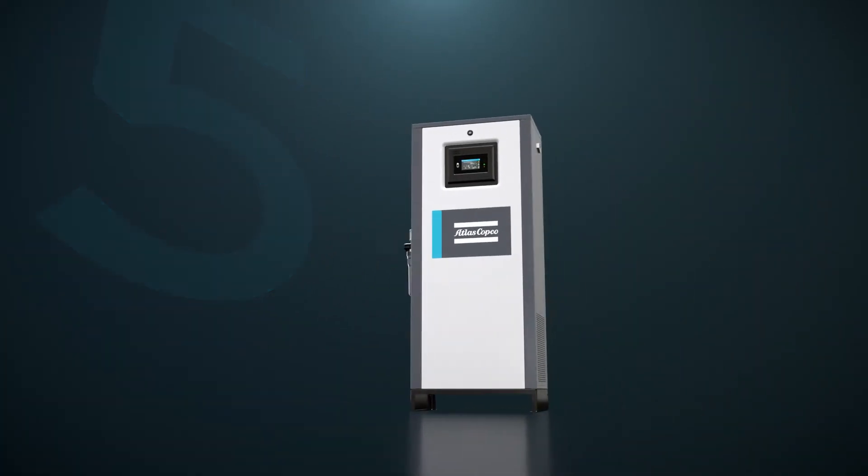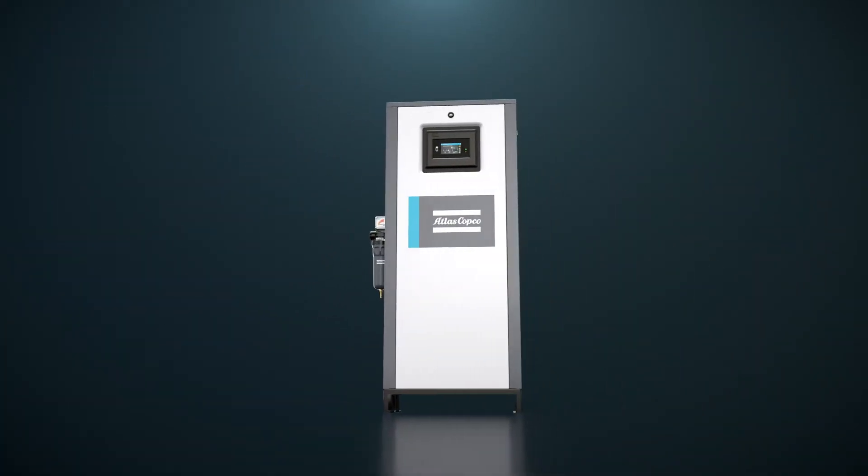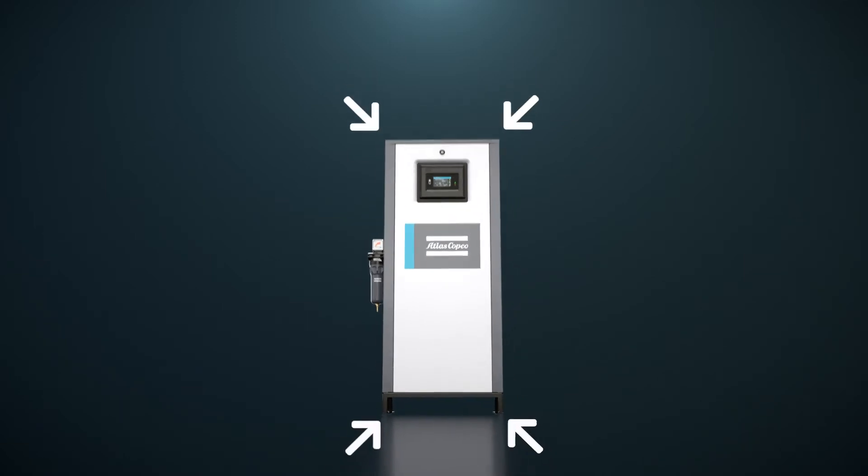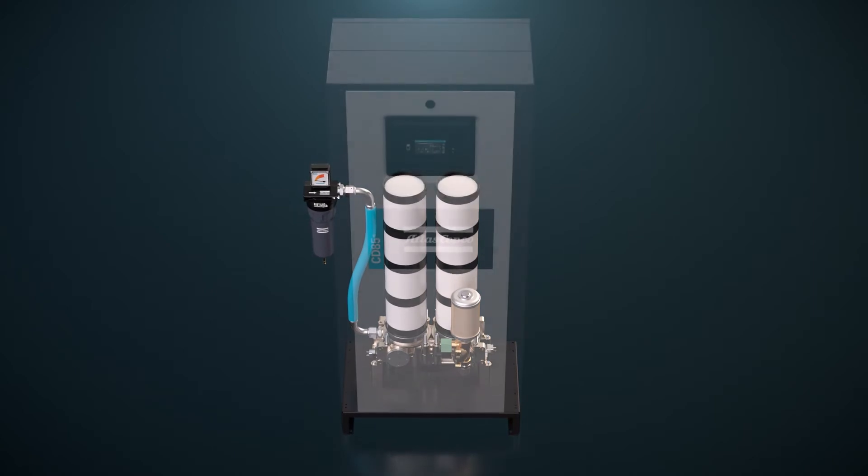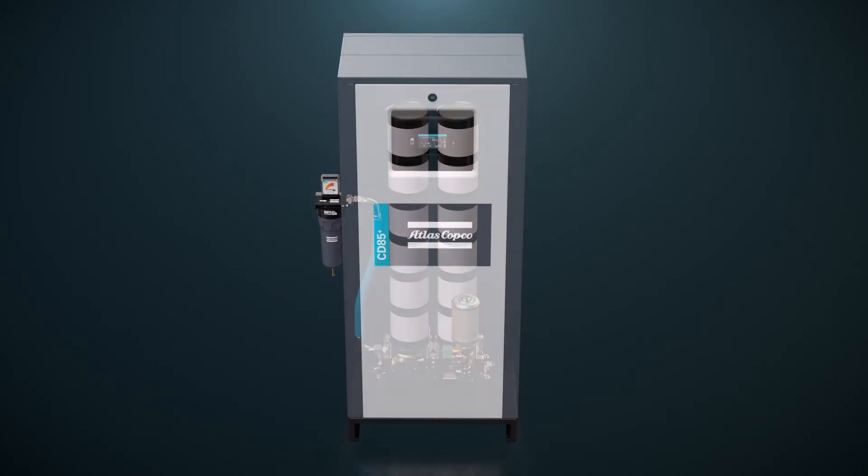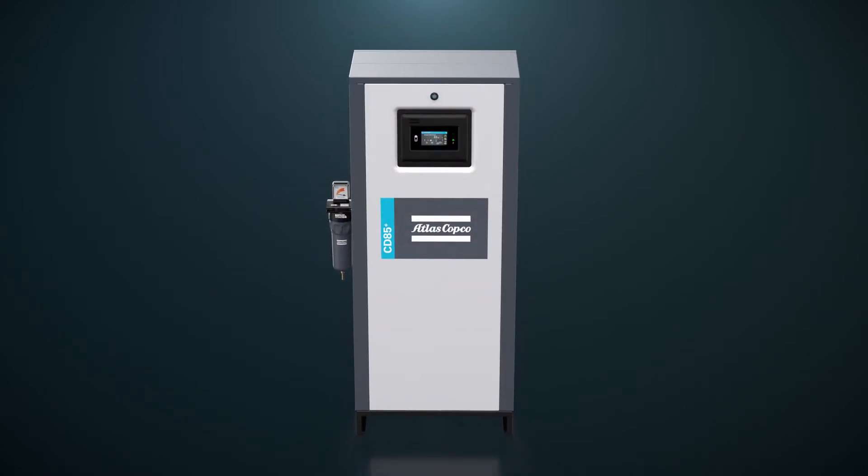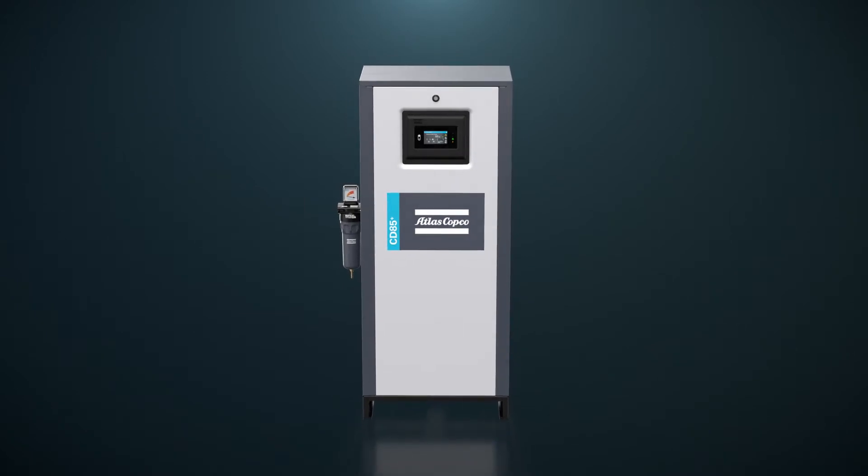Finally, dryers with ceramic desiccant can handle a higher airflow. That means we can make them more compact. Just take a look at the first dryer with Serides, the new Atlas Copco CD Plus 20-335, which is much smaller than its previous version.